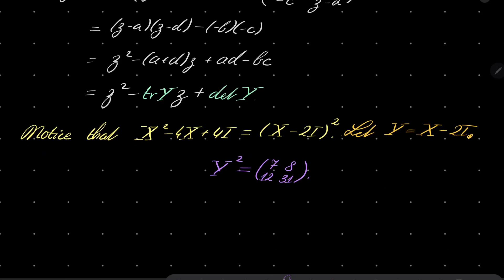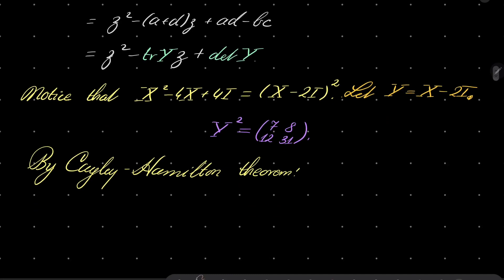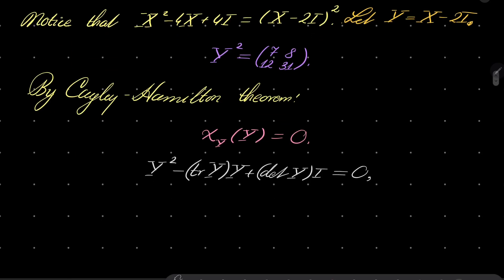By the Cayley-Hamilton theorem, the characteristic polynomial of Y, when Y is plugged in, gives the zero matrix. So Y squared minus trace(Y) times Y plus det(Y) times the identity matrix equals the zero matrix. Putting it the other way around: trace(Y) times Y equals Y squared plus det(Y) times I. I will call this equation triangle.